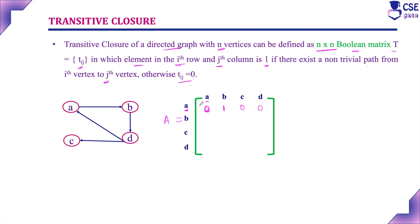From vertex B: B to D, there is a direct path, so we represent it as 1. The remaining positions are 0. From vertex C: there is no existence of path from C to A, B, or D, so all positions in row C are 0. From vertex D: there is a path from D to A, so we represent it as 1. D to C, there is a direct path, so it is 1. D to B and D to D have no path, so they are 0. This gives us the complete adjacency matrix.